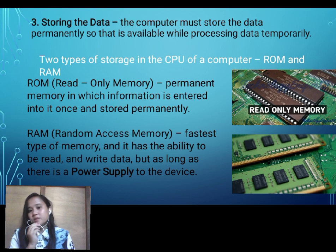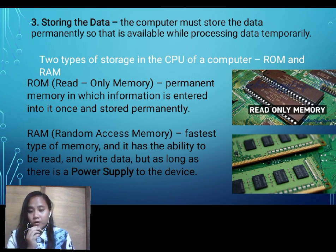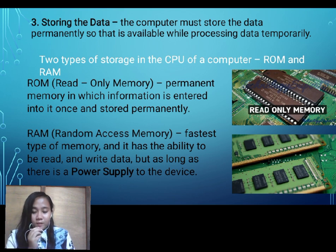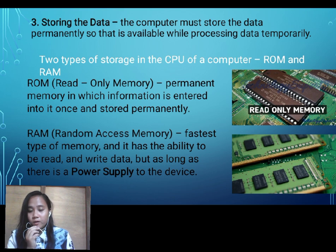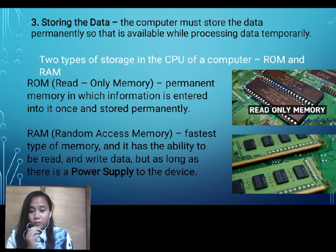The third function is the storing function. The computer must store the data permanently so that it is available while processing data temporarily. Basically, there are two types of storage in the CPU of the computer: the ROM and the RAM. The ROM, which stands for Read Only Memory, is a permanent memory in which information is entered once and stored permanently.